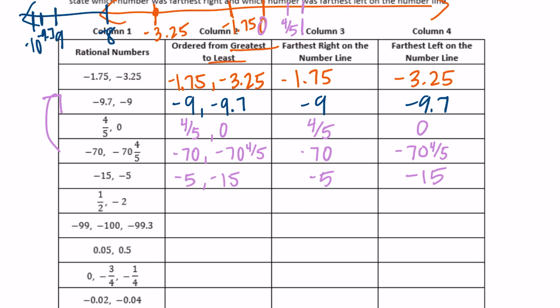1 half and negative 2. The greater number — these are easier when it's just a positive and a negative number, because obviously the positive number is greater than the negative number. So 1 half is furthest to the right, negative 2 is furthest to the left.